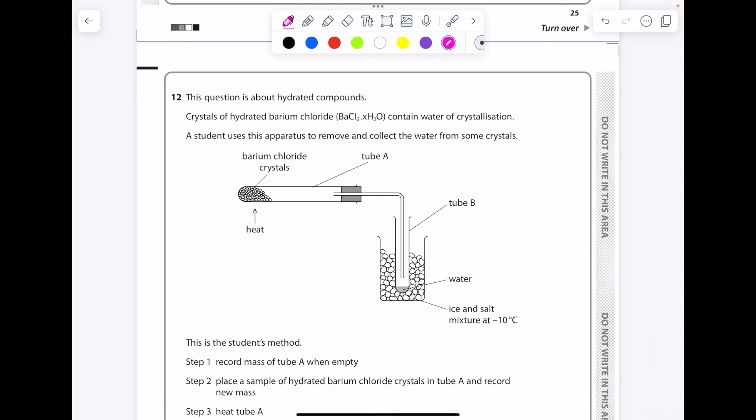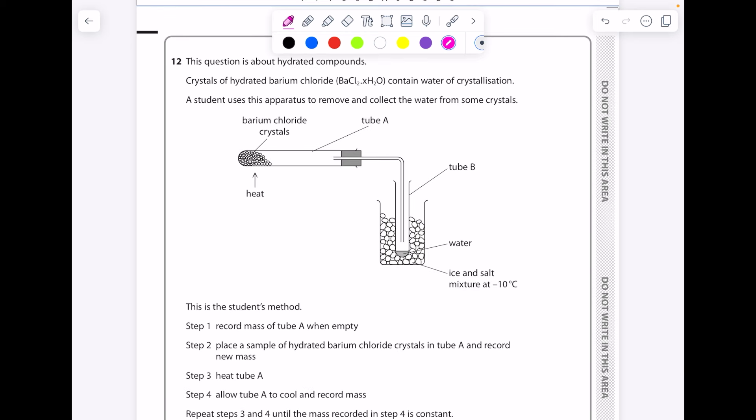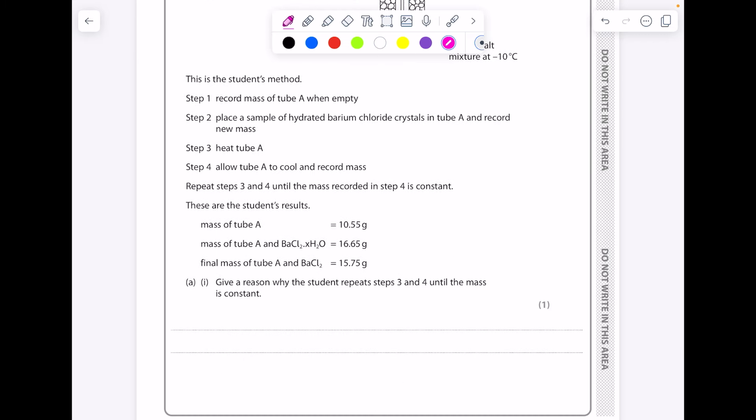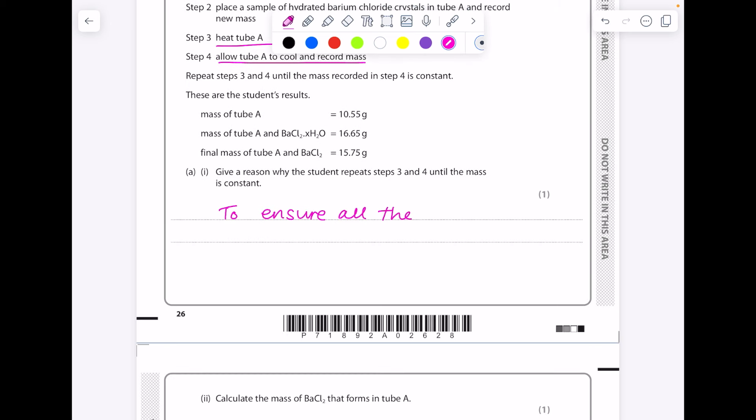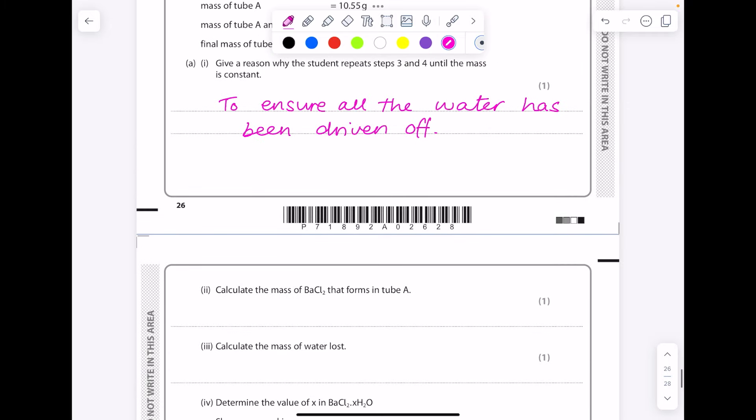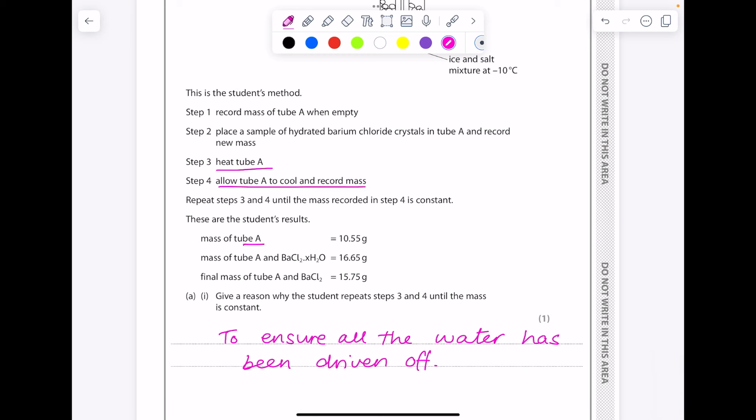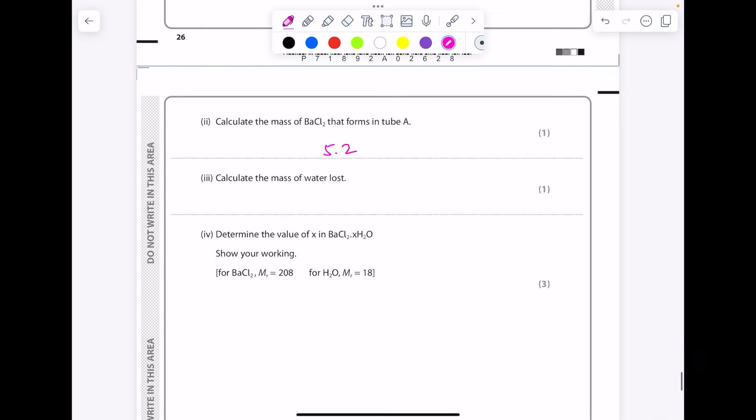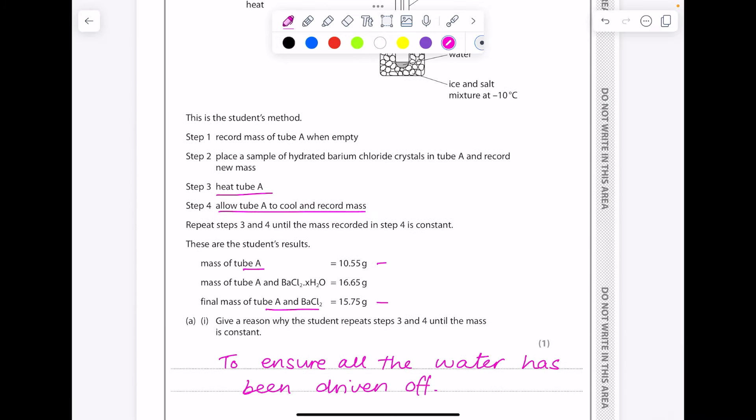This question is about hydrated compounds. Crystals of hydrated barium chloride contain water of crystallization. A student uses this apparatus to remove and collect the water from some crystals. This is the student's method. Give a reason why the student repeats steps 3 and 4 until the mass is constant. It's to ensure that all that water has been driven off, basically. Calculate the mass of barium chloride that forms in tube A. So we need the dry version because we don't want any water in there, so we work out the difference between these two numbers to get 5.2 grams. Calculate the mass of water lost. So you need the difference between these two numbers because this one has water in it and this one doesn't, so that's just 0.9 grams.